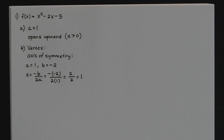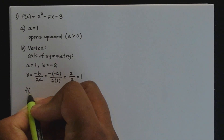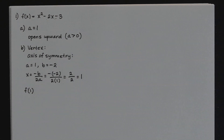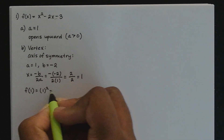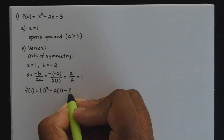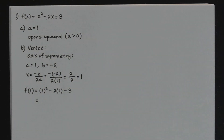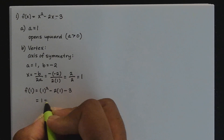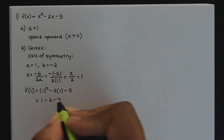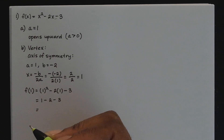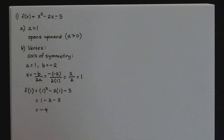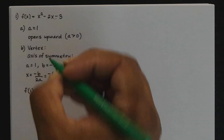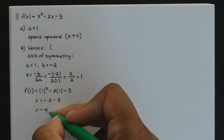For the y-coordinate of the vertex, take what x is, which is 1, and substitute it for each and every x in f of x. So this means we have 1 squared minus 2 times 1, minus 3. Simplifying: 1 squared is 1, minus 2 times 1 which is 2, minus 3. So 1 minus 2 minus 3 equals negative 4. The y-coordinate of that vertex is negative 4, so the vertex is the ordered pair (1, negative 4).